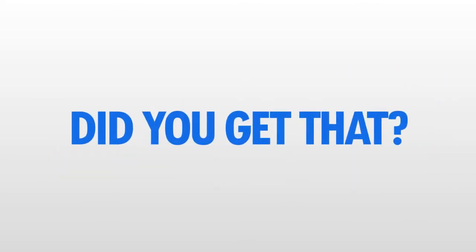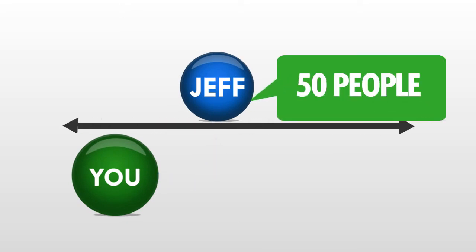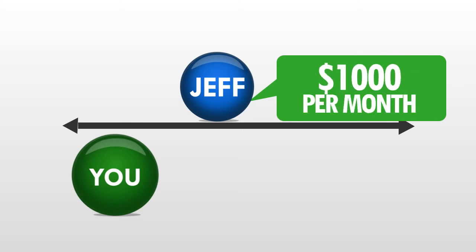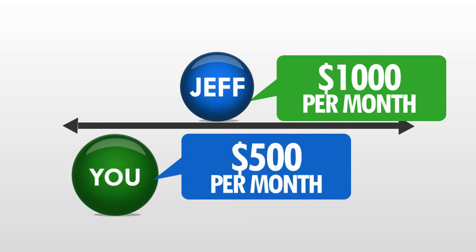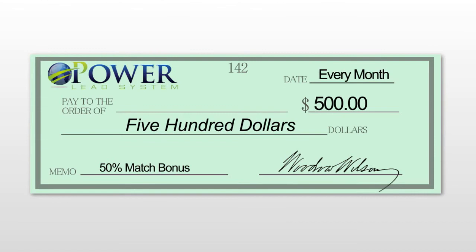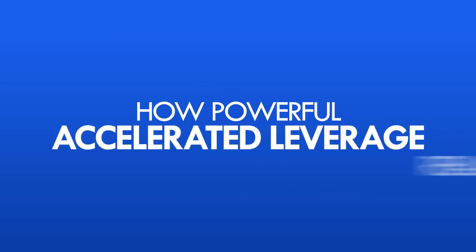Now did you get that? Let me help you visualize just how powerful this really is. Suppose you sponsor me and I was one of your roll ups. And let's say my pay line grew to 50 people. At $20 per month per person, I'd be making $1,000 per month but since you sponsor me and I rolled up, you'll make a 50% matching bonus. In other words, that's $500 in monthly residual income that you'd be making from my entire pay line. Now at this point, you should be realizing how powerful accelerated leverage really is.